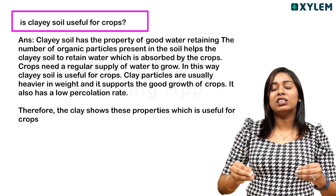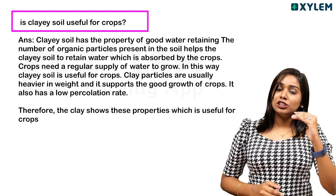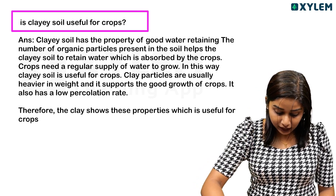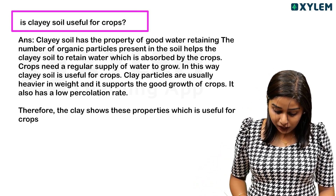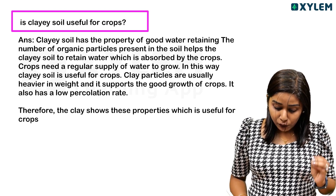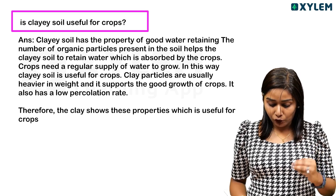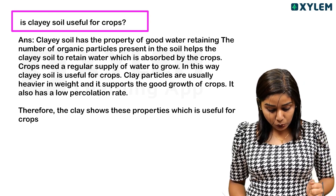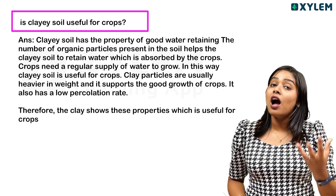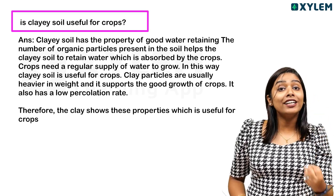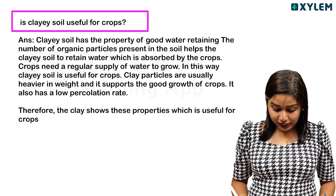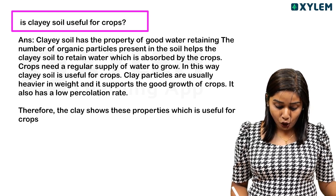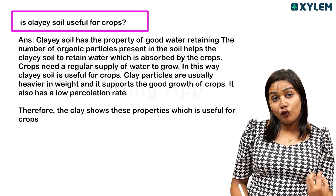Clay soil is appropriate for crop cultivation. Clay soil has the capacity for good water retention, and the number of organic particles present in the soil helps the clay soil to retain water, which is absorbed by the crops. Crops need a regular supply of water to grow. Clay particles are usually heavier in weight and support the good growth of crops. It also has a lower percolation rate.